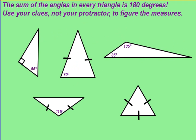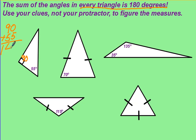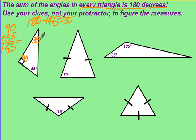You can use your clues instead of your protractor to find missing angles. We know that every triangle has a total of 180 degrees as the sum of their angles. This triangle has 90 degrees and 55 degrees, so 90 plus 55 is 145 degrees. We've used up 145 out of 180, so 180 minus 145 gives us 35 degrees for the missing angle.